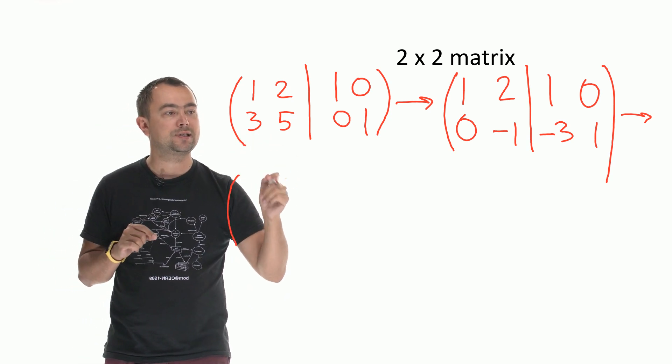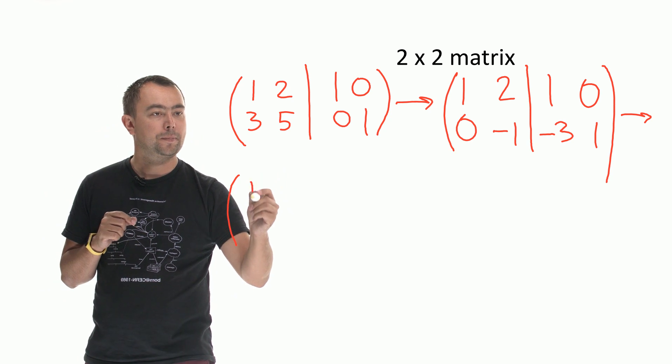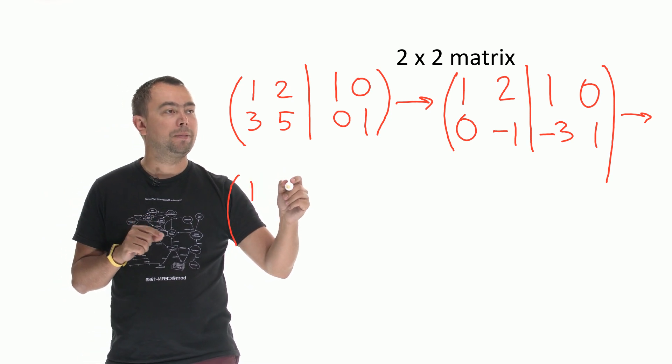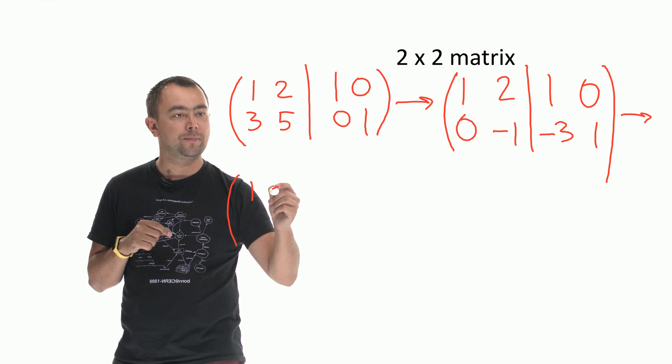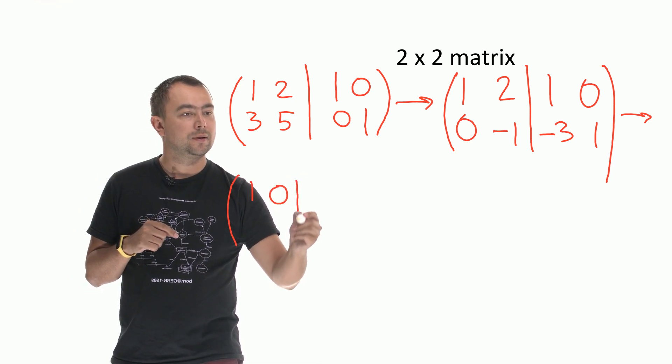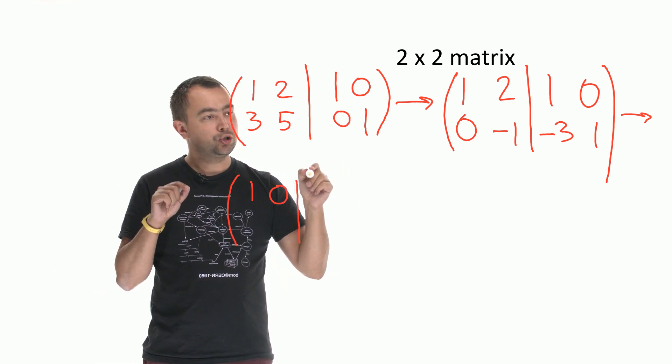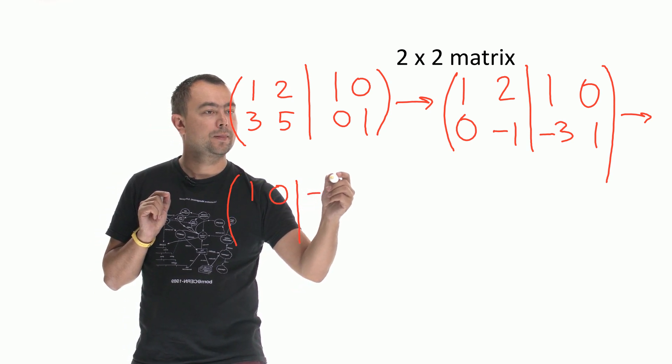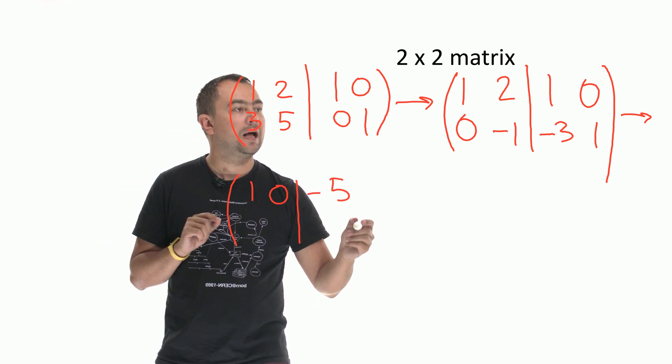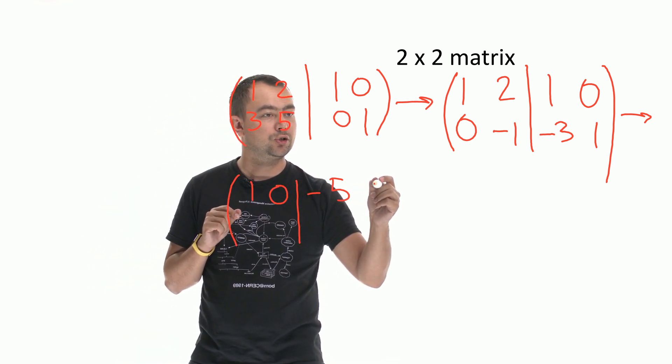1 plus 0 times 2 is 1. 2 plus 2 times minus 1 is 0. Then 1 plus 2 times minus 3 is minus 5. 0 plus 2 times 1 is 2.